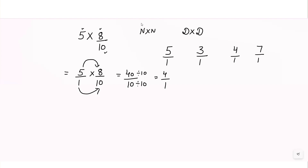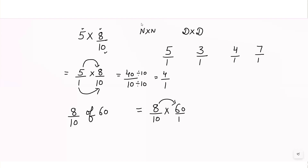Another question: 8/10 of 60. Whenever we see the word 'of,' it means multiply. So we write 8/10 into 60. Since 60 has no denominator given, we write 1 below it. Multiply numerator with numerator and denominator with denominator: 8 × 60 = 480 over 10, which simplifies with 10 to give the answer 48.